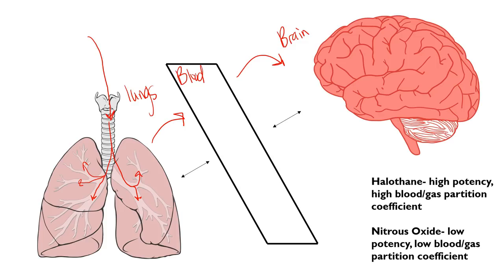That's the basic way inhaled anesthetics work: the drug goes from the lungs to the blood, and only from the blood can it reach the tissues, the main one being the brain. Notice that this is a double-sided arrow, so a drug can enter from the lungs, go to the blood, and then go back again. It can also go from the blood to the brain or any other tissue and return to the blood and then back to the lungs. It all depends on the solubility and permeability of the membrane.